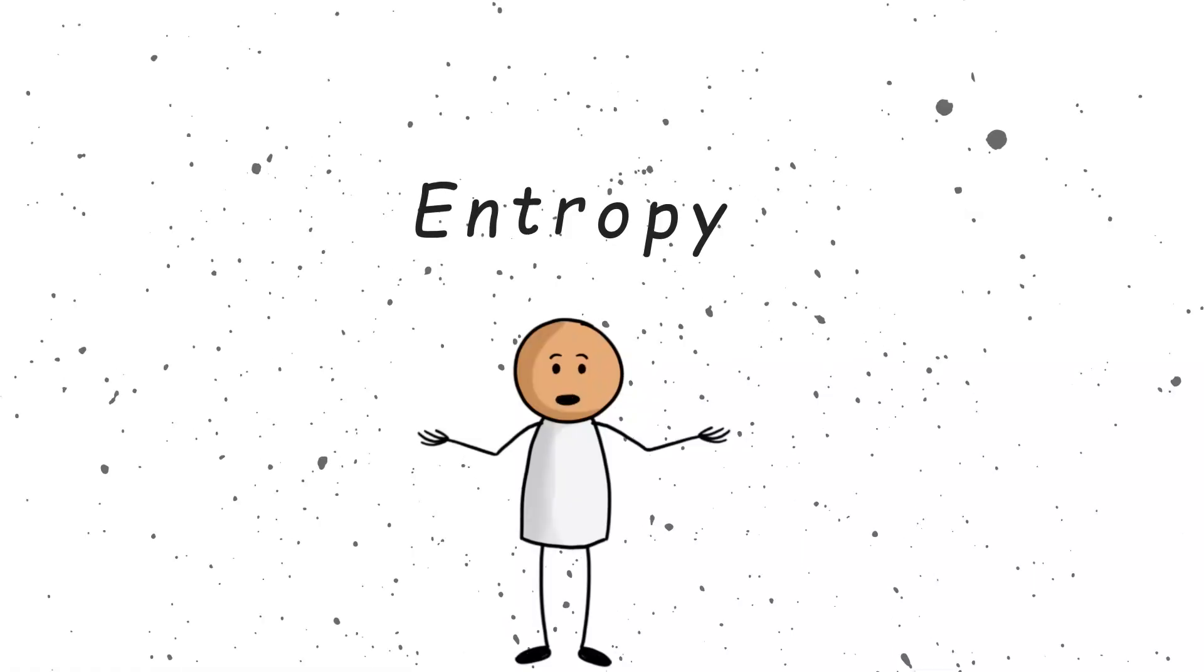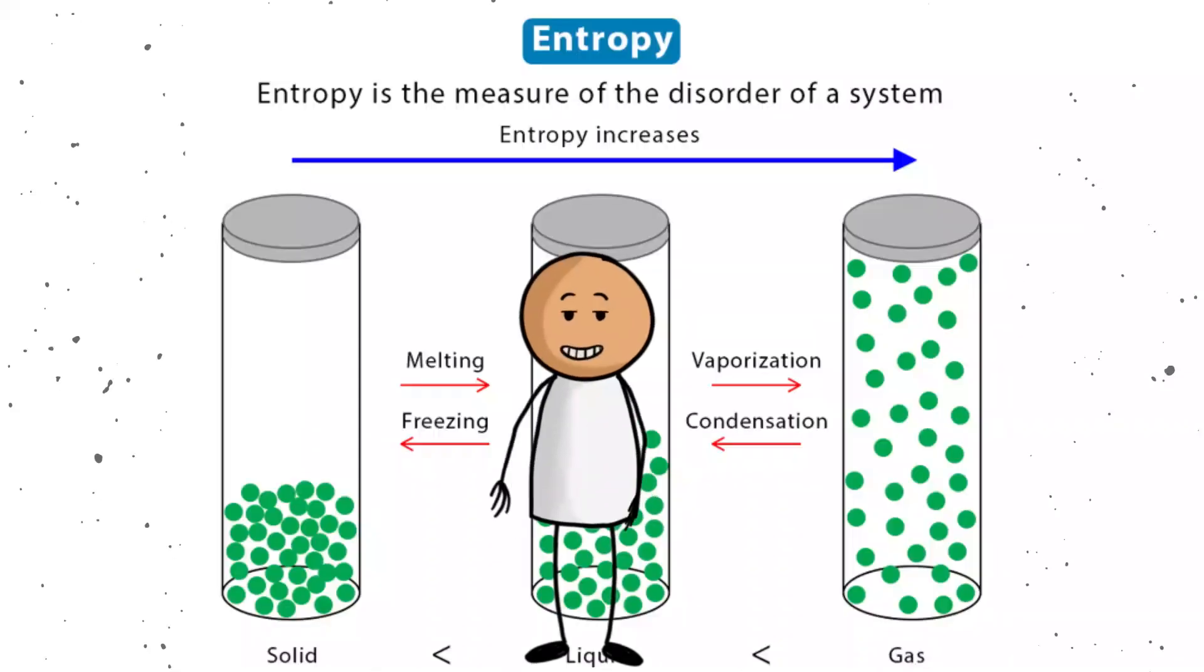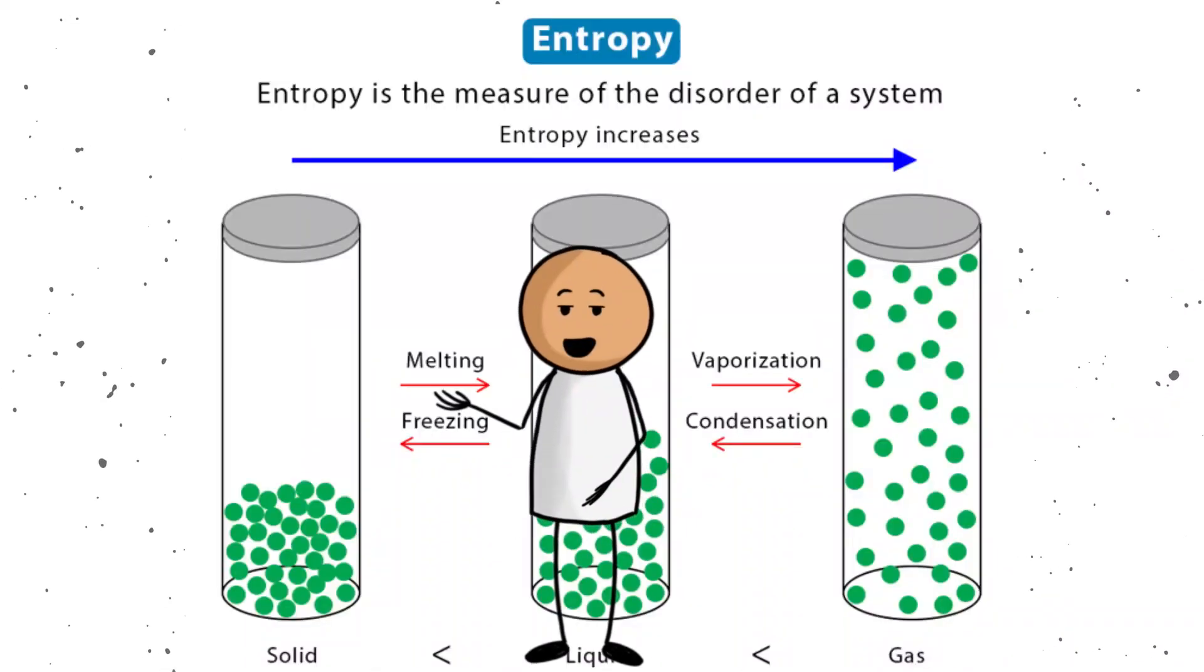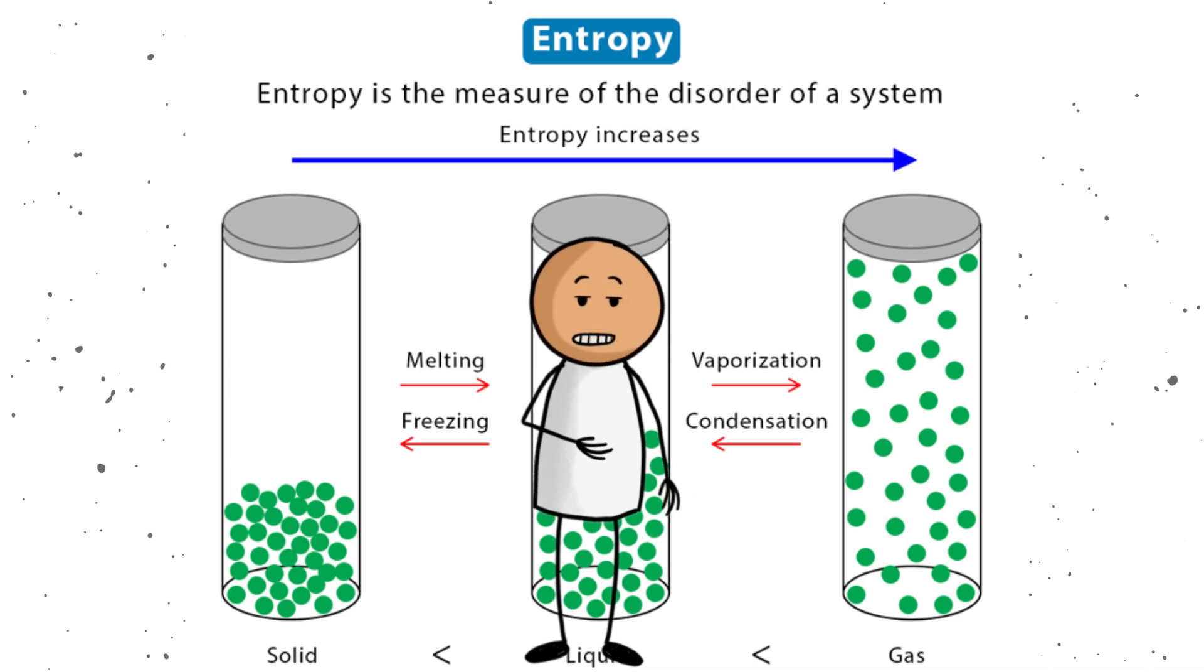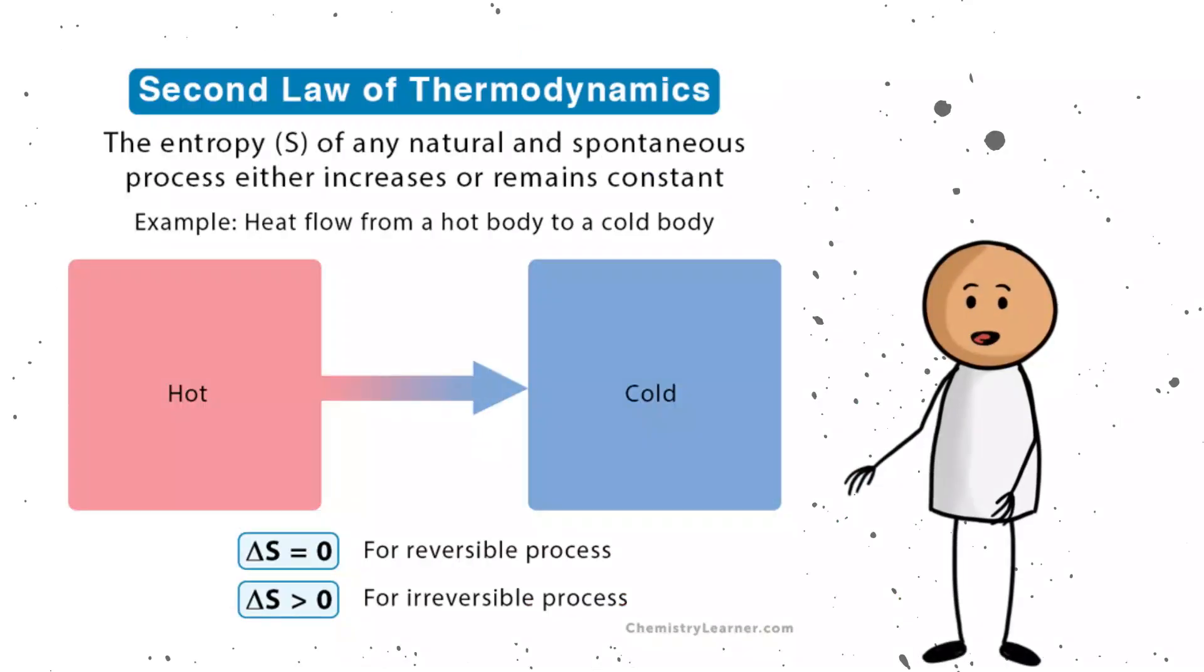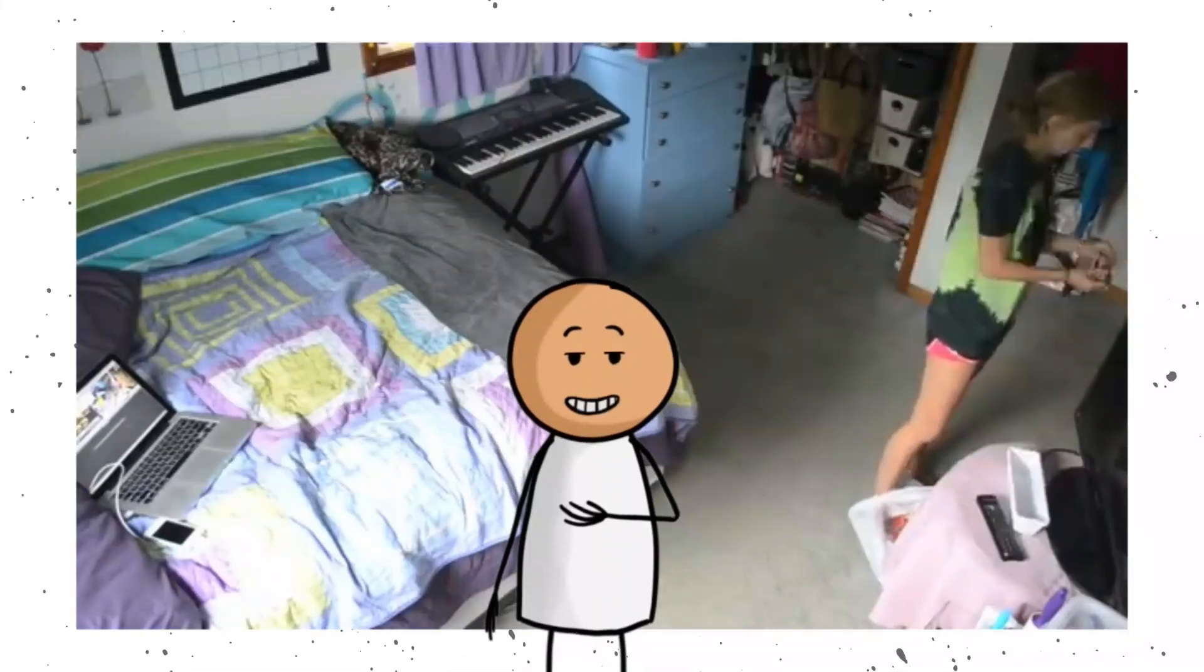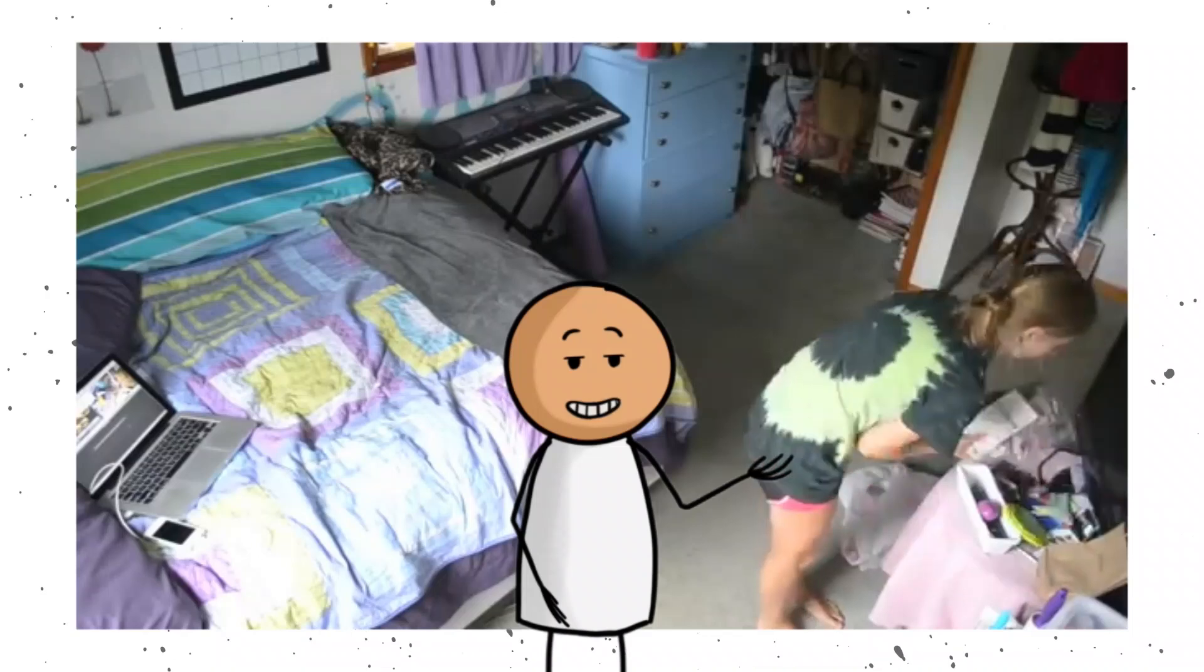The secret is something called entropy. Entropy is just a fancy word for disorder or chaos. Think about your bedroom. When you clean it, it looks nice and tidy, but after a few days of living in it, it gets messy again. That messiness is increasing entropy. The second law of thermodynamics says that entropy tends to increase in a closed system. In other words, things naturally get more messy or disorganized over time. This gives time its direction. The past was more ordered, and the future is more chaotic.